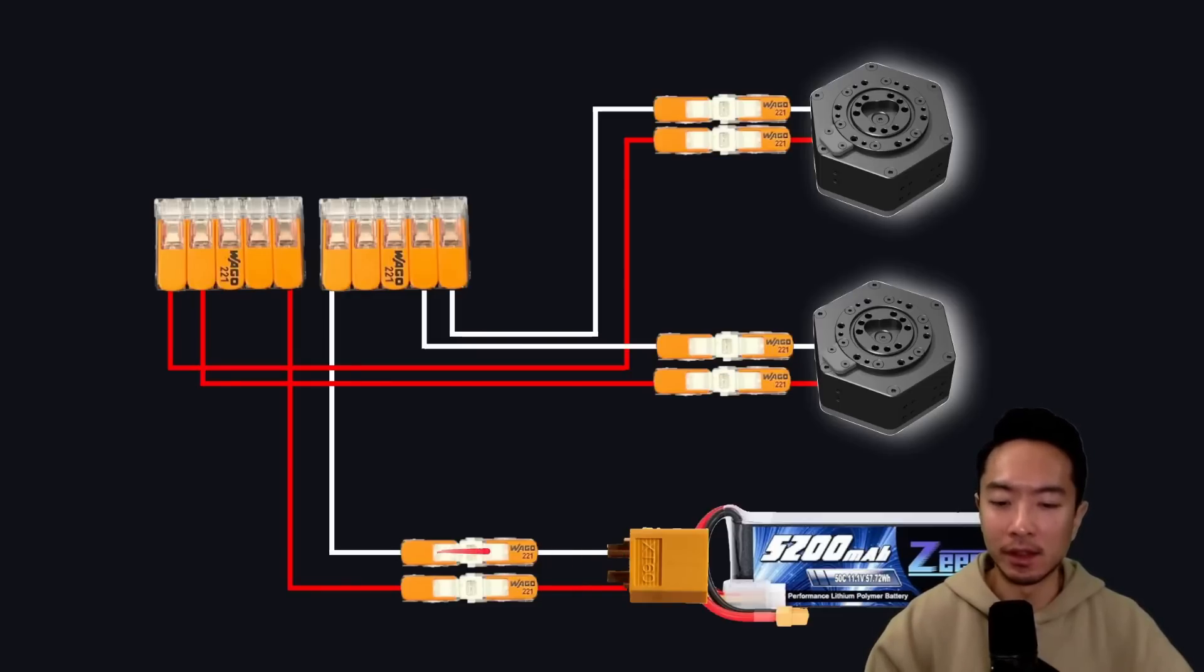You could use these single-port inline connectors again to connect it from the end of the XT60 connector to the rest of these five-port connectors, or you could just connect it directly to the five-port if your cable is long enough. So go ahead and see which solution works for you. But the main idea is you make the same connection as we did for the power supply. Then you should be able to power up your motors.